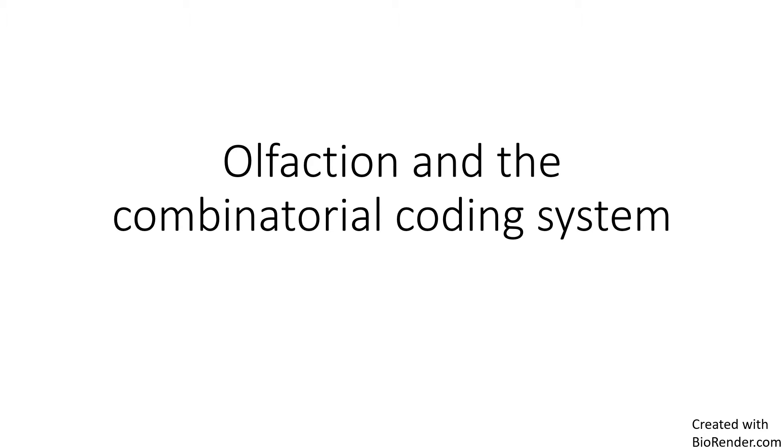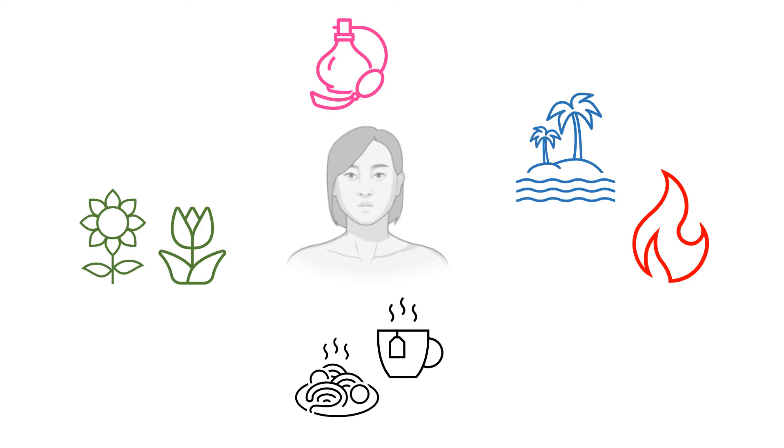This video will talk about olfaction and the combinatorial coating system. The sense of smell in humans is a complex system that is often overlooked in day-to-day life. Its complexities tell us about our environment and warn us of dangers like spoiled food and fire.